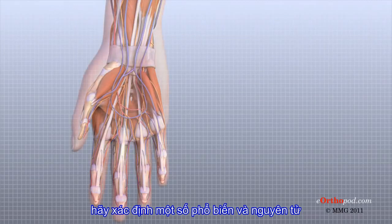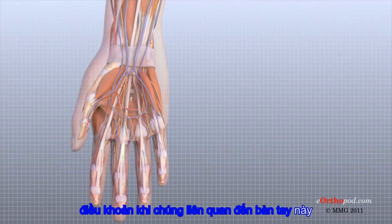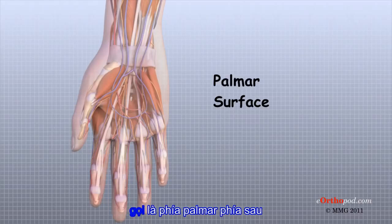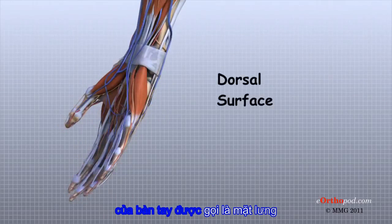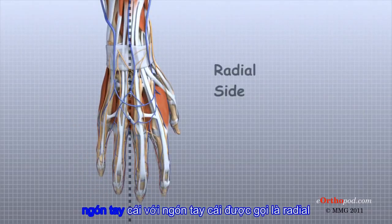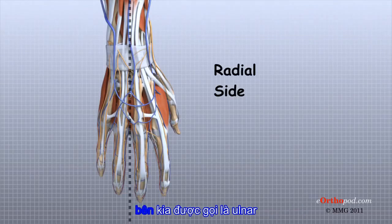Let's define some common anatomic terms as they relate to the hand. This will make it clearer as we talk about the structures of the hand later. The front or palm side of the hand is referred to as the palmar side. The back of the hand is called the dorsal side. The half of the hand from the middle finger to the thumb is called the radial side, and the other half is called the ulnar side.